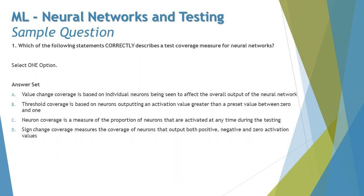Option D says: sign change coverage measures the coverage of neurons that output both positive, negative, and zero activation values. Sign change coverage actually measures the proportion of neurons activated across both valid and invalid scenarios, as discussed in the previous tutorial. In that context, option D is also not describing the measure correctly, so it can be ruled out.